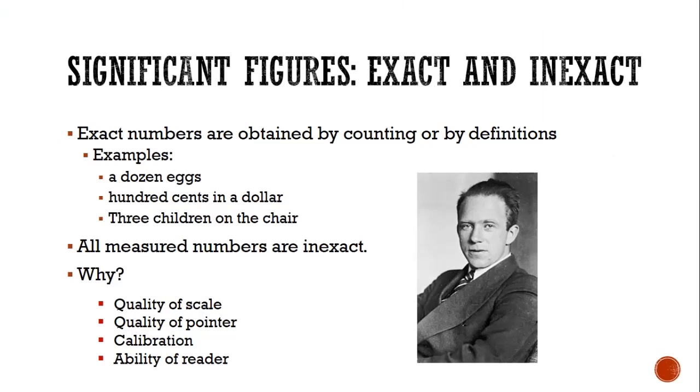If you look at the examples there: a dozen eggs, a hundred cents in a dollar, three children on a chair. When you look at all of these, you can see that we could physically count the objects that are there. And I bet that if you took a moment and thought, you could think of other examples of things that you could count. Think about going to the grocery store or the farmers market or Lowe's even. What do you find there that you could count? Those are exact numbers.